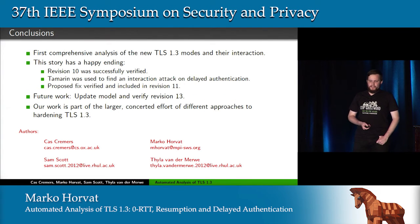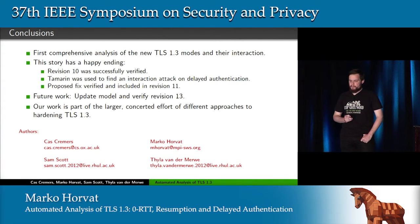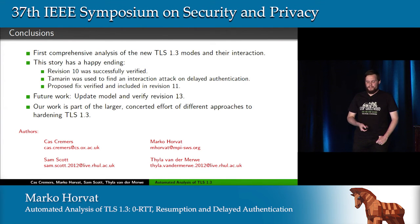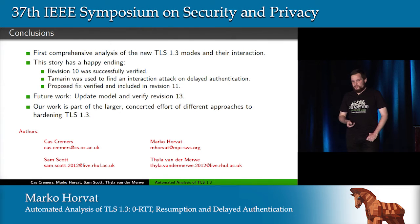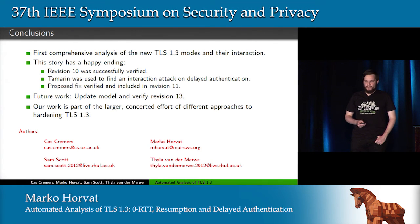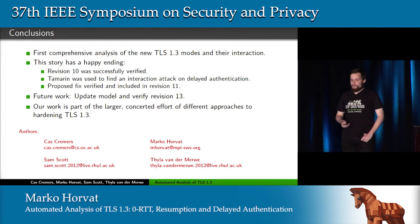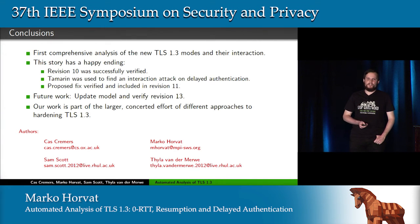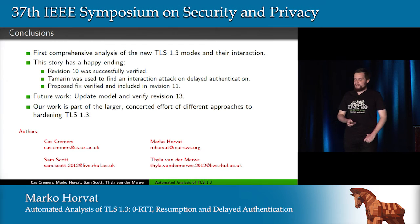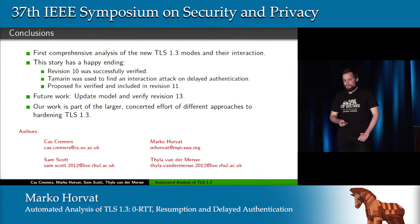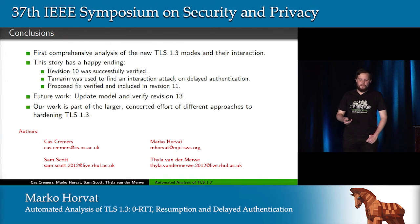To sum up, this was the first and, to the best of our knowledge, only comprehensive analysis of the new TLS 1.3 modes and their interactions. The story has a happy ending: we successfully verified revision 10 using Tamarin, found an interaction attack on the delayed client authentication mechanism, and the proposed fix was verified and included in revision 11. For future work, we'd like to update our model to revision 13 and verify it with a stronger adversary model and new properties. We believe our work is just one piece of the puzzle and want to continue contributing to the larger concerted effort of hardening TLS 1.3.